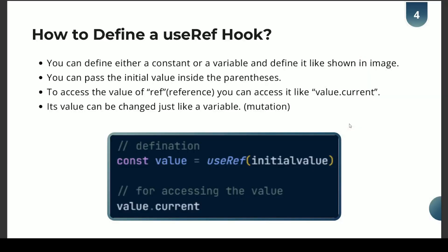Let's see how to define a useRef hook. You can define either a constant or a variable, and you can pass the initial value inside the parentheses — it can be null or whatever value you like. To access the value of the reference, you access it like value.current. This name can be anything, and its value can be changed — you can mutate this variable just like a regular JavaScript variable.